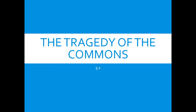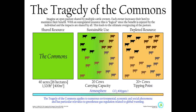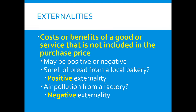5.1 — the tragedy of the commons. This should be a review; we did an activity at the beginning of the year for this. If you look at this image, you can imagine an open pasture where multiple cattle owners are sharing. Each owner increases their herd to maximize their own benefit because it's unregulated. The benefit is enjoyed by the individual while the impacts are shared by all, so ultimately overgrazing will occur — that's the tragedy of the commons.